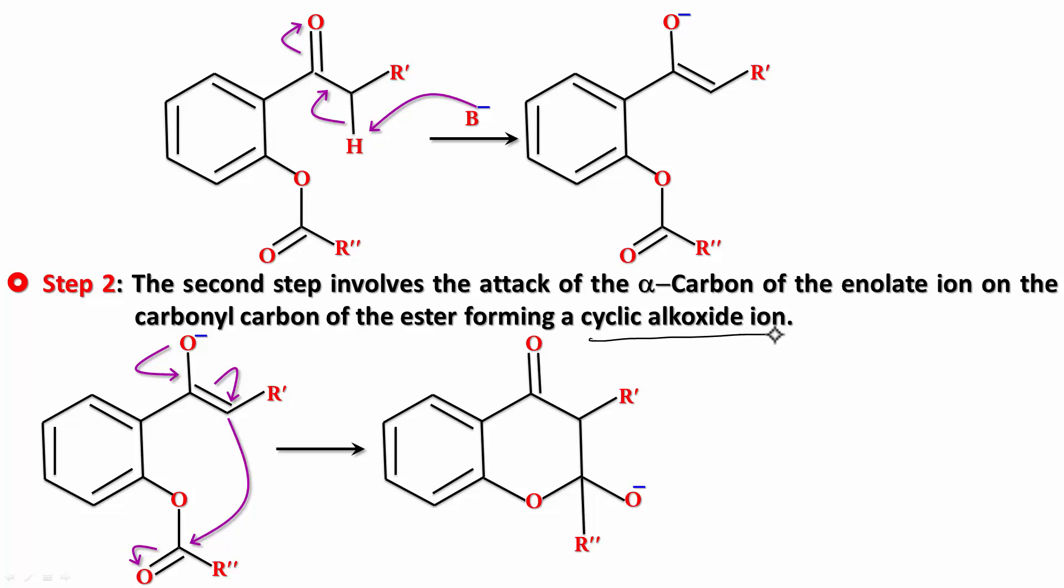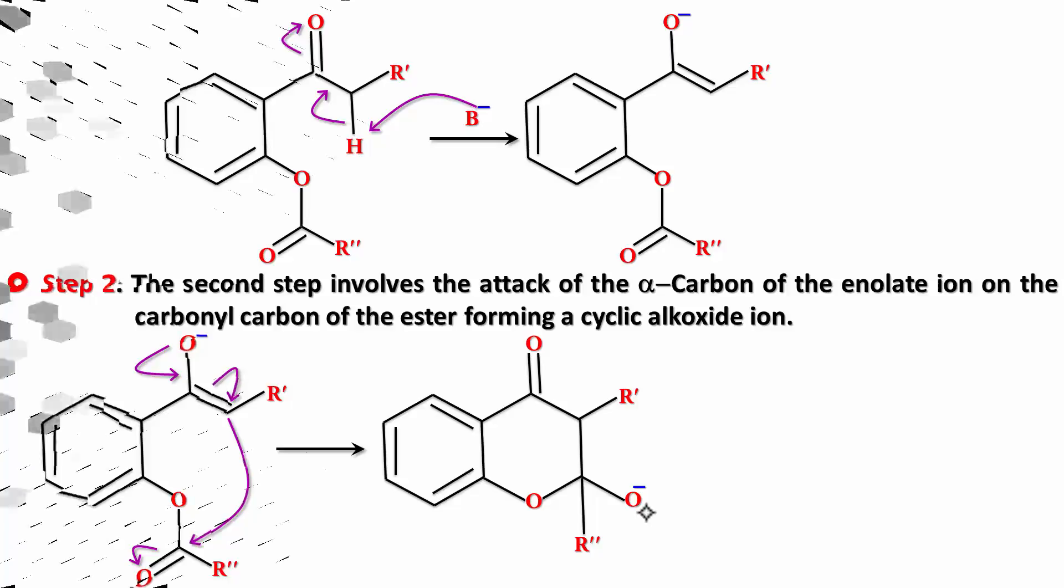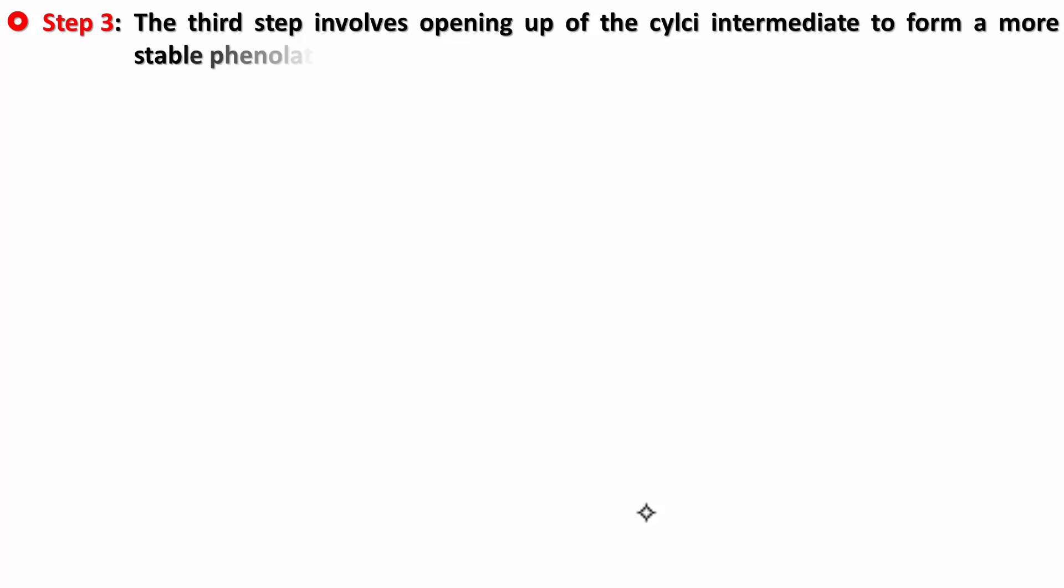In the next step, the cyclic alkoxide ion opens and the phenoxide ion, the most stable phenoxide ion, leaves. Step 3 involves opening of the cyclic intermediate to form a more stable phenolate ion or phenoxide ion. The negative charge returns between the carbon and oxygen, this bond breaks in favor of oxygen.